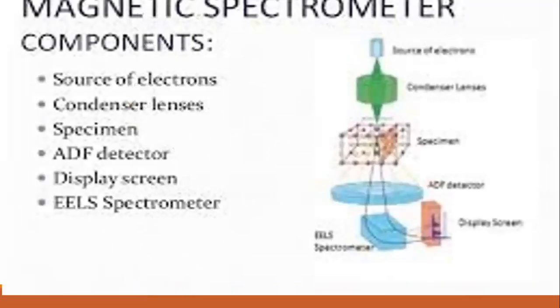Components of a magnetic spectrometer: firstly, source of electrons, in green color condenser lenses, and further specimen, then ADF detector and display screen, and ELS spectrometer.